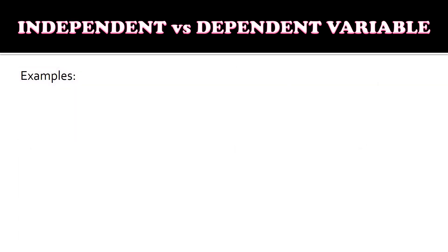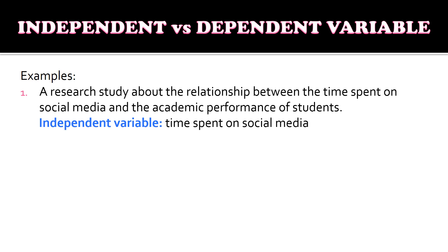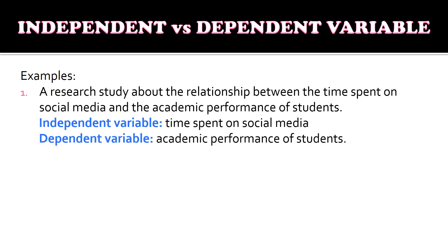Let us have examples to identify the independent and dependent variable. For example number one, a research study about the relationship between the time spent on social media and the academic performance of students. The independent variable is the time spent on social media and the dependent variable is the academic performance of the student. This is the variable that we can actually manipulate, and how much time spent on social media affects the academic performance of the students.